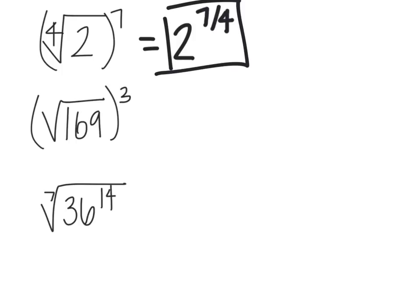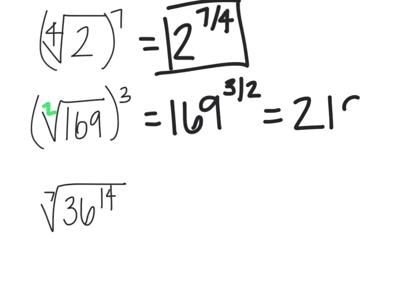So on this next one, I have the square root of 169 to the third power. Well, that is the same thing as 169 to the three halves power. Remember, if there is no index, there's no number outside, that number is a 2. And you can type this in your calculator if you want to, or you can think about it. The square root of 169 is 13. And so this problem is really 13 to the third power, which is going to give us 2197.